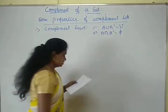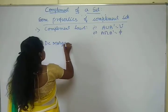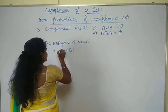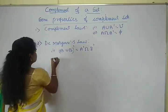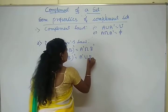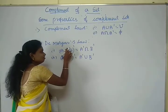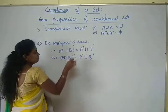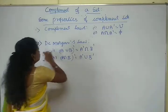The next property is De Morgan's law — a very important law. The first form is: A union B whole dash is equal to A dash intersection B dash. Another form of De Morgan's law is: A intersection B whole dash is equal to A dash union B dash. So when we have union inside the complement, it becomes intersection outside, and vice versa.